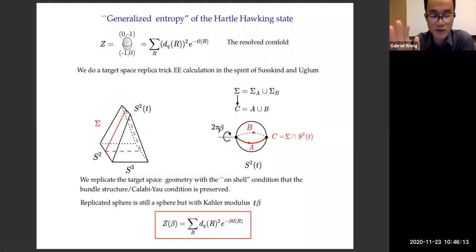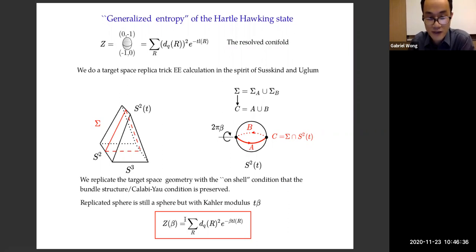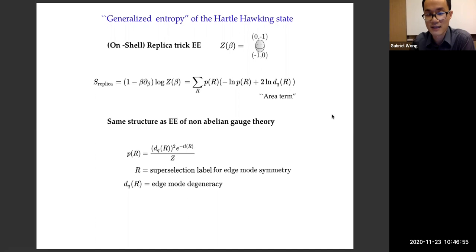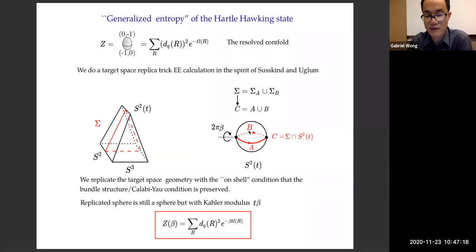We impose a very important condition when we replicate: there's an on-shell condition that the bundle structure has to be the same, meaning the Calabi-Yau condition remains satisfied. When you replicate a bundle over a sphere in this way, you just make a bigger sphere — topologically still a sphere — and the Kähler modulus increases by beta. Therefore the replicated manifold's partition function is simple: it's just like the one before replication but with T multiplied by beta. Following this prescription gives us an entropy we think of as generalized entropy. It's very much like the entanglement entropy of a non-abelian gauge theory: there's a probability factor P(R), where R labels some kind of edge-mode symmetry representations, and there's a degeneracy factor DQ(R). This term 2 log DQ(R) is what I call the area term, the factor of two coming from cutting the closed string twice.